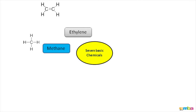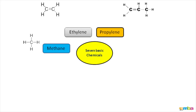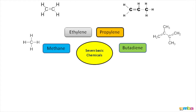The third one, propylene — three carbon items with a double and single bond attached to carbon items and hydrogen items. The next one, butadiene — double bond carbon items and single bond carbon-to-carbon and hydrogen items.